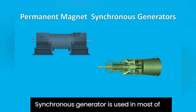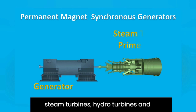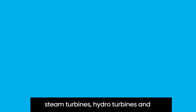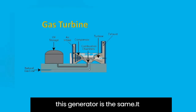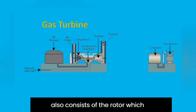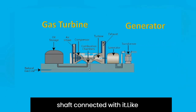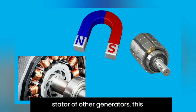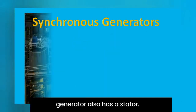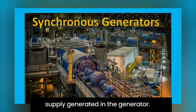Synchronous generators are used in most power generation plants, with steam turbines, hydro turbines, and gas turbines. Like other generators, the physical structure of this generator is the same. It consists of a rotor comprising a permanent magnet with a shaft connected to it, and a stator that serves as the output source of the power supply generated in the generator.